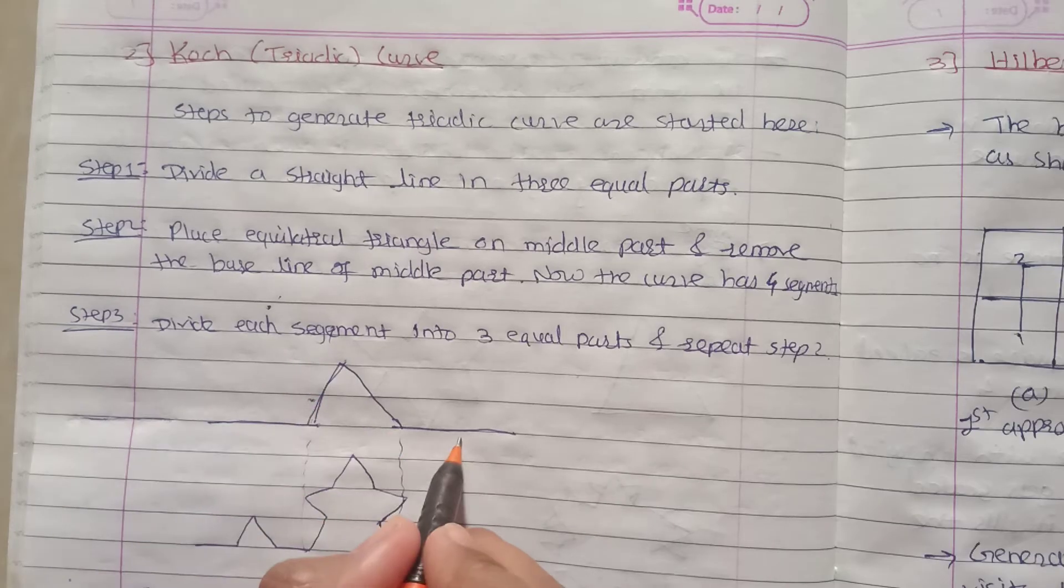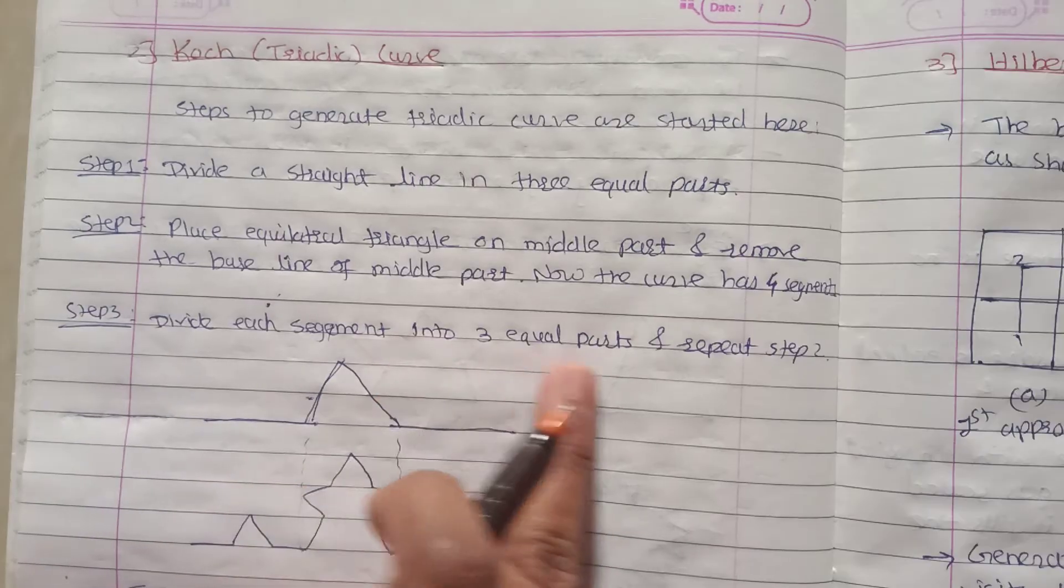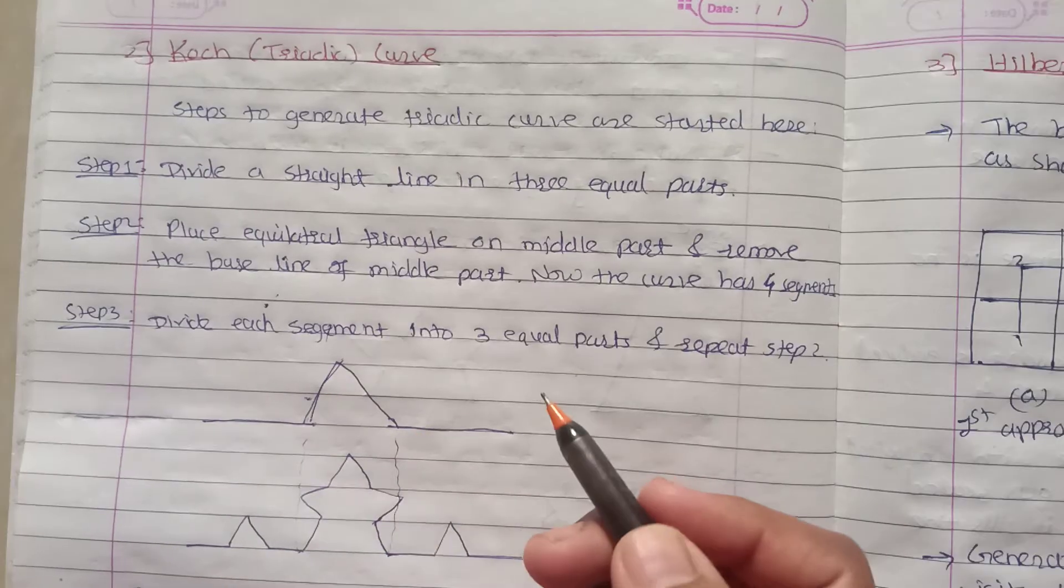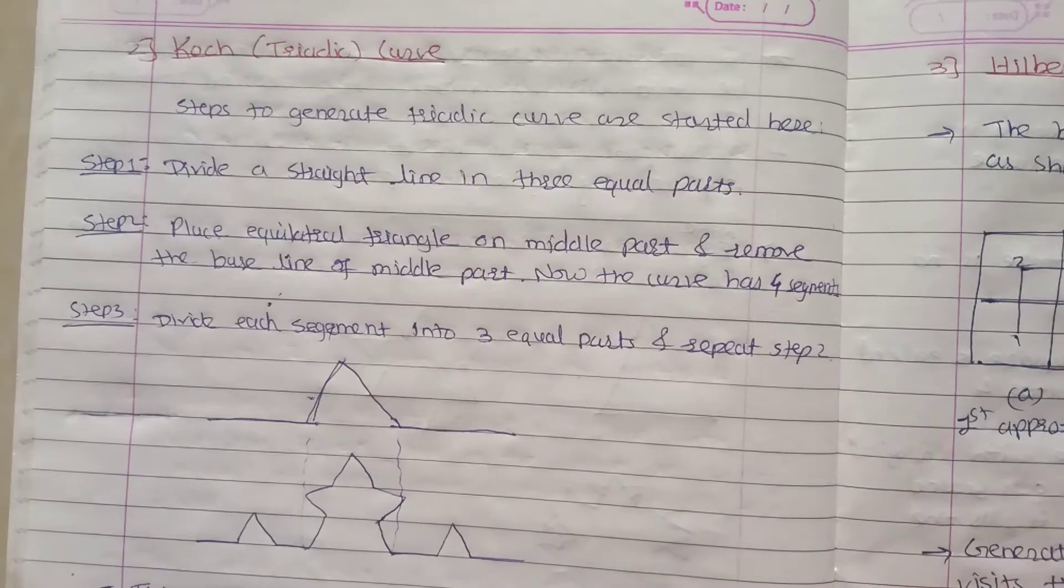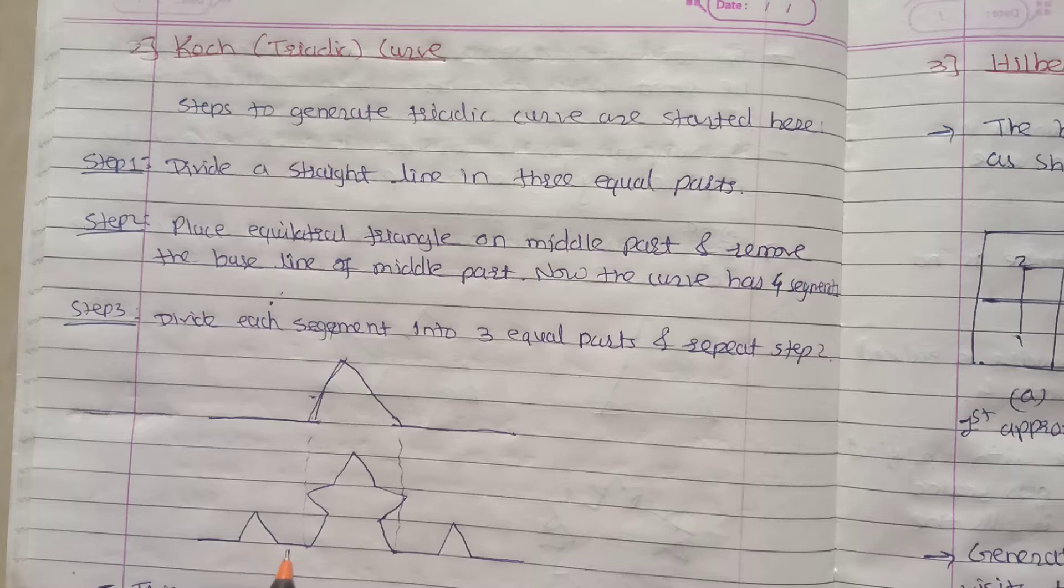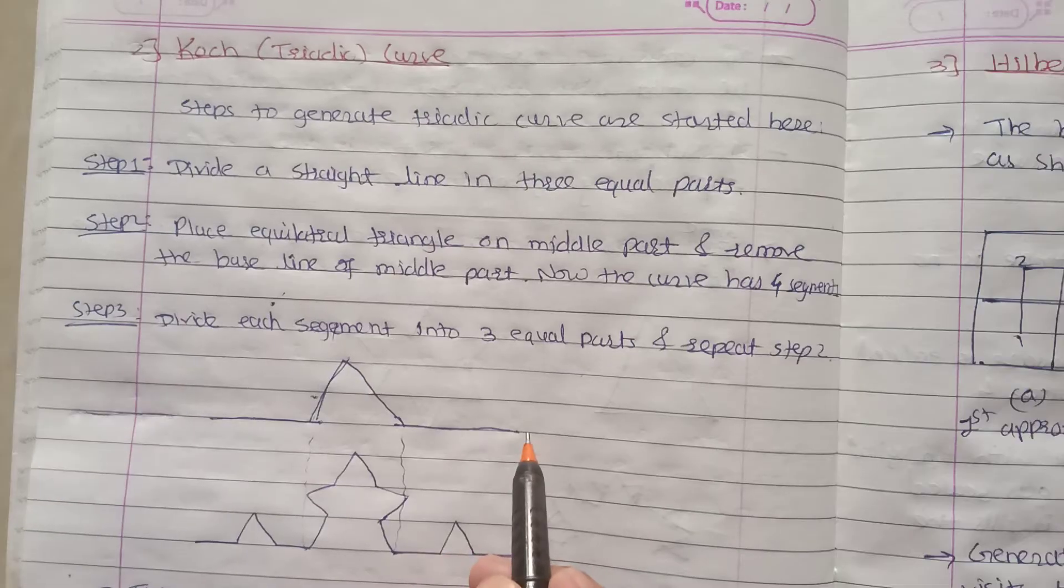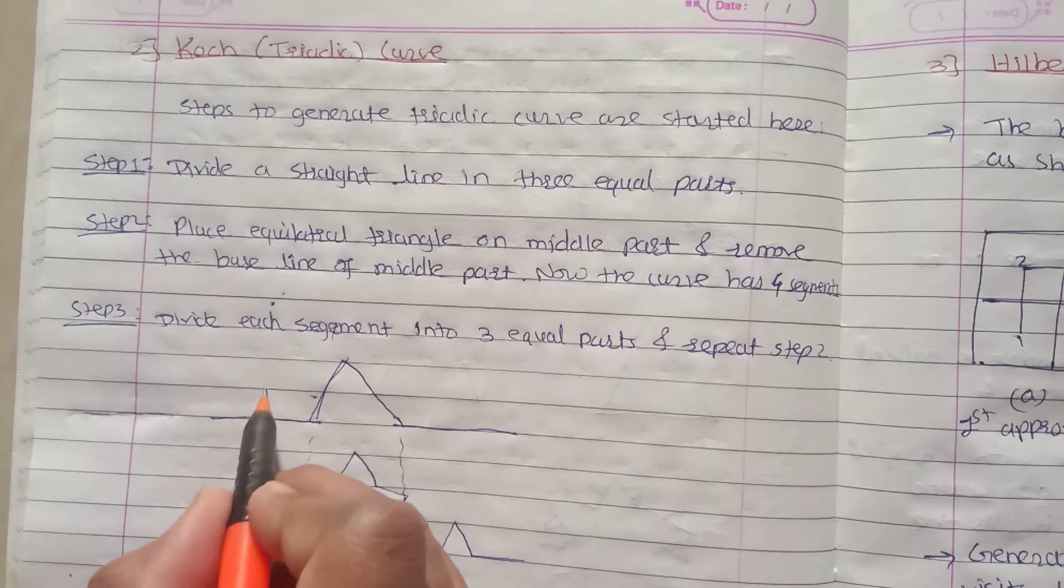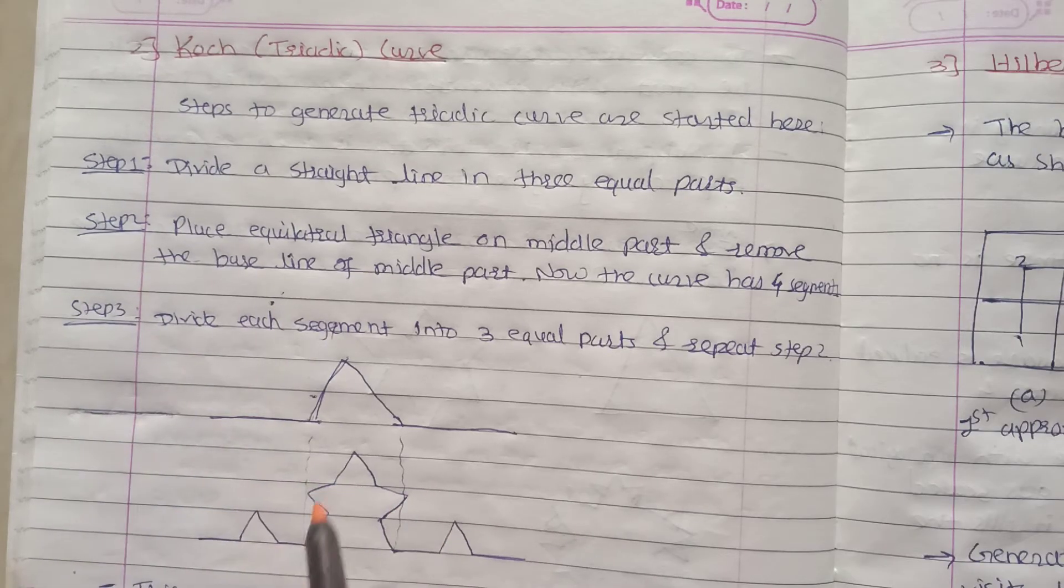Now we have the four line segments. Now divide this segment into three equal parts and repeat the step two.